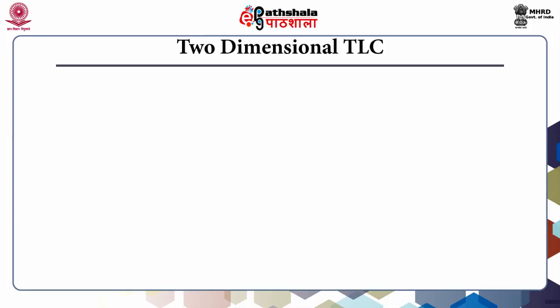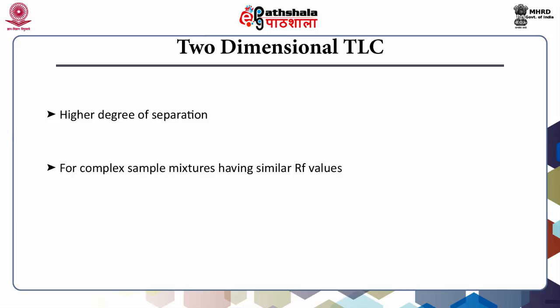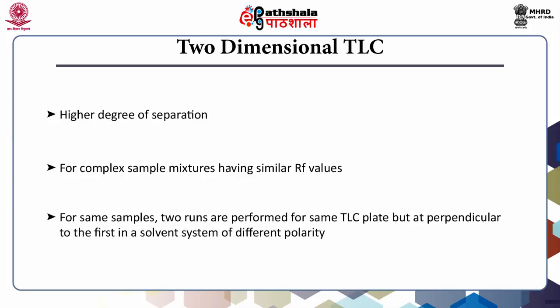Two-dimensional thin layer chromatography is used for a higher degree of separation. In complex sample mixtures having Rf values very close to each other, the sample is spotted on one corner and a solvent system is used to develop the TLC in one direction. Once developed, the TLC plate is removed and air dried. Another run is then performed at a perpendicular direction to the first, using a solvent system of different polarity. Thus, in two-dimensional TLC, spots are separated twice, resulting in efficient and better separation.